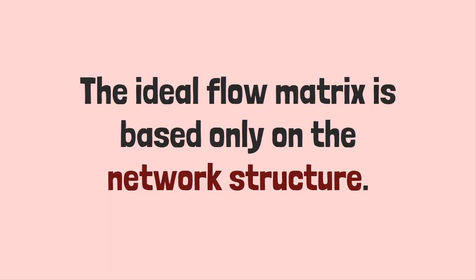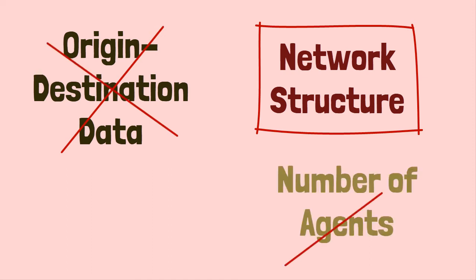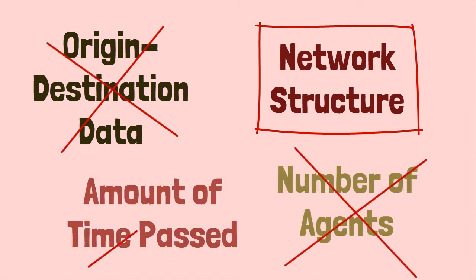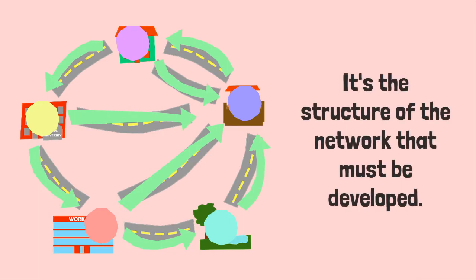The ideal flow matrix exists based on merely the network structure and the probability distribution of where the agents move towards using random walk. It doesn't depend on origin-destination demand, the amount of agents or the amount of time that passes by. It doesn't matter how many cars there are or how long it goes on. It's the structure of the network that must be developed.